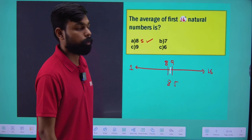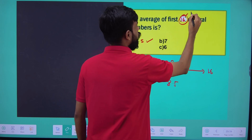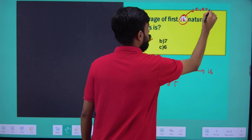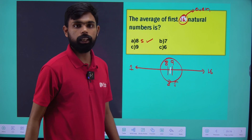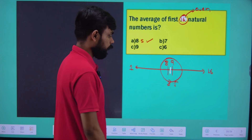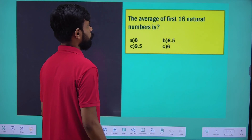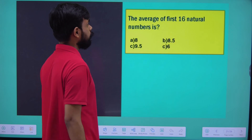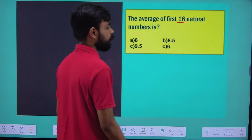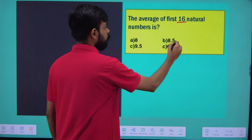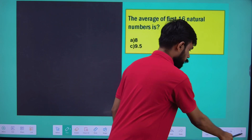Let's see — we have two numbers here. We have to answer with two numbers. The average of 60 natural numbers at 3. The average is 8.5.